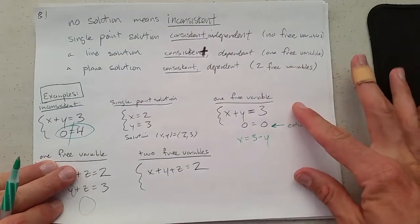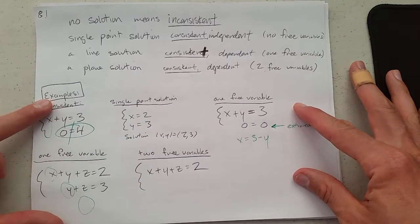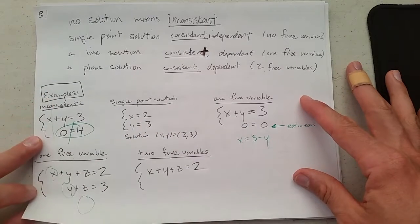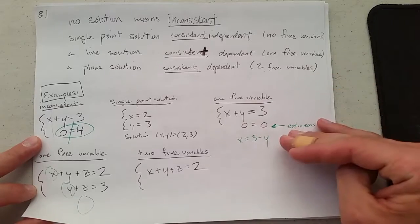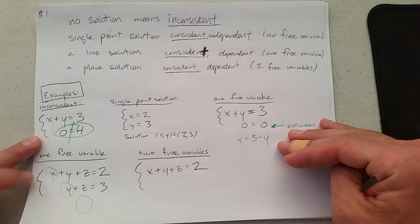We're not going to look very much at solutions as systems in this form. So you don't need to worry about how to determine how many free variables you get from these forms. We're going to look in a row reduced matrix.